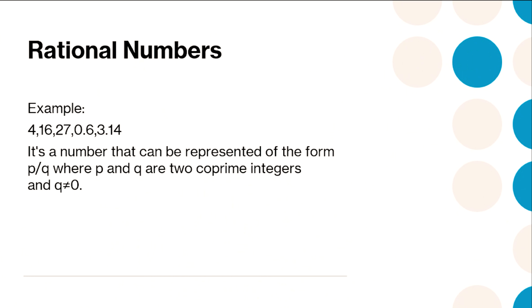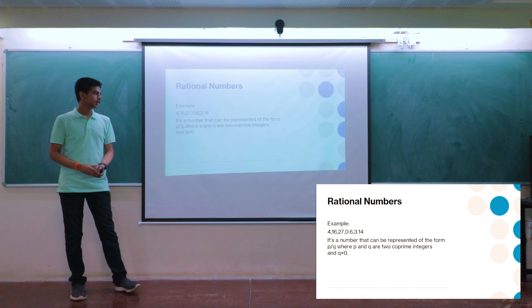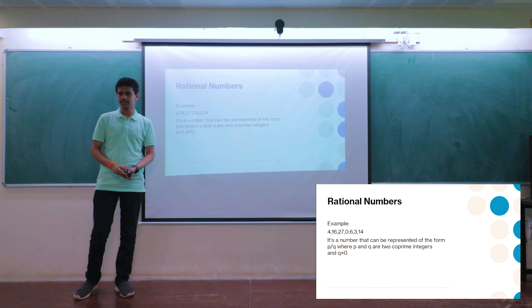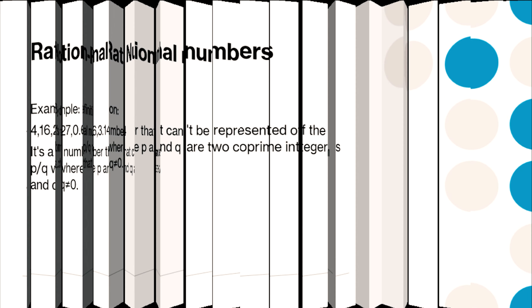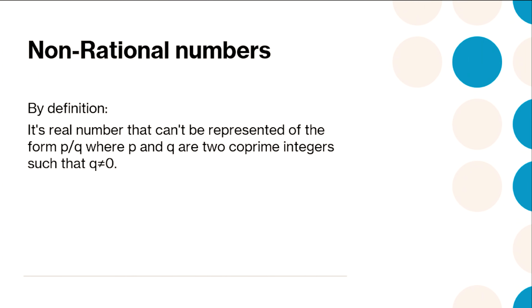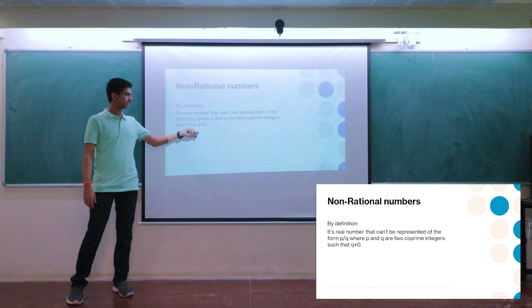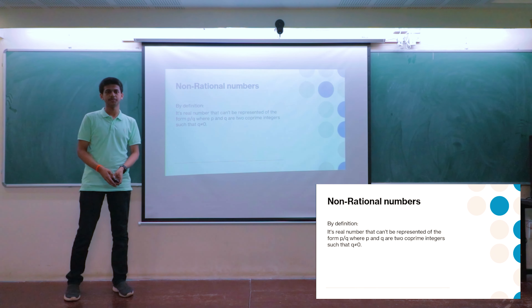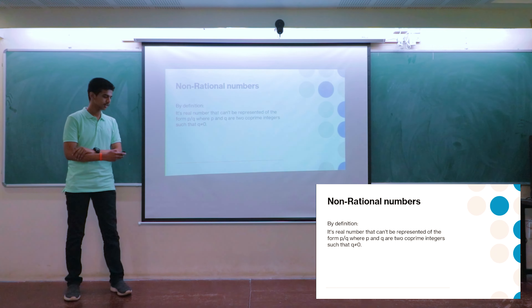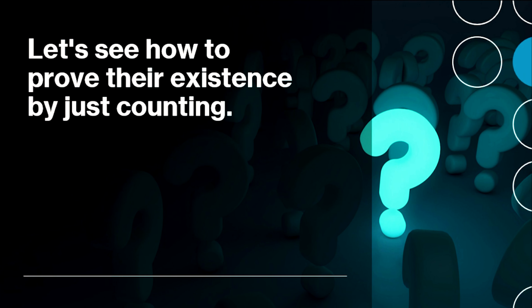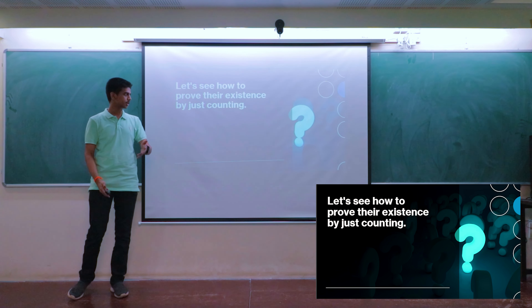I think everyone is familiar with the term rational number. It's just a number that can be represented in the form p/q, where p and q are co-prime integers and q is not equal to zero. The opposite of this is an irrational number — a real number which cannot be represented in the form p/q. By the end of today's talk, we will see how to prove the existence of irrational numbers by just counting.